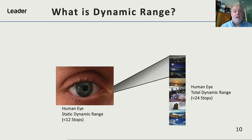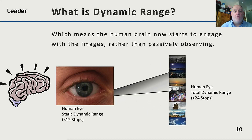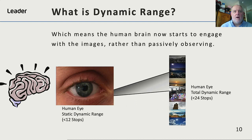When you couple this with the human brain that sits behind the eye, rather than passively observing an image, we start to actively engage with the picture. We look at it in more detail and take in more information. And that's why high dynamic range is so important.